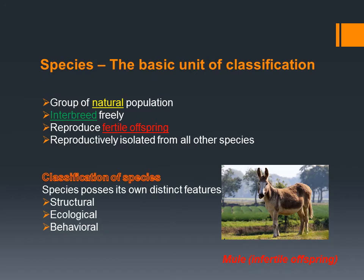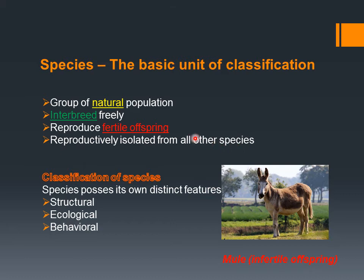Now let us introduce the smallest unit of classification, known as species. Dear students, note this question: what characteristics make species a unit of classification? This question is important for annual and board exams. A species is a group of natural populations that can interbreed freely and reproduce fertile offspring.